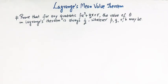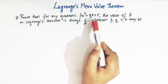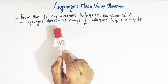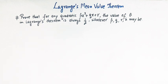Hello viewers. In today's class we are going to discuss yet another important concept from Lagrange's mean value theorem. Here we have a very important problem in which we have to prove that for any quadratic function px squared plus qx plus r, the value of theta in Lagrange's theorem is always half, irrespective of the values of p, q, r, and h.